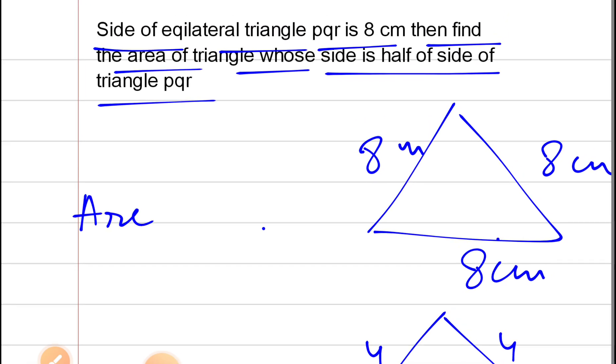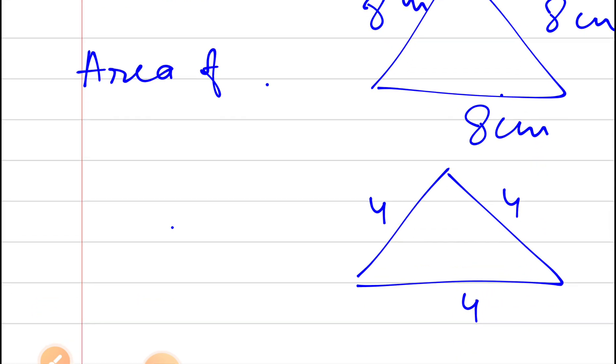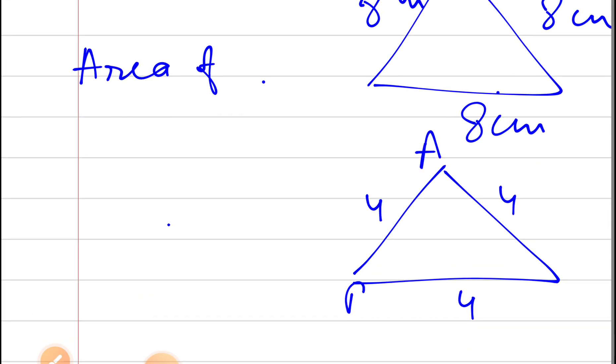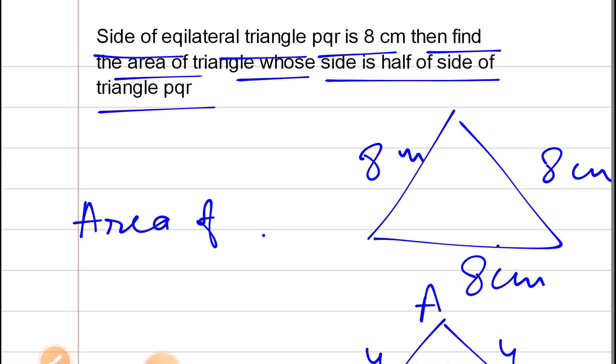Then the area of this triangle, let me call it ABC and it was PQR. So triangle ABC which is root 3 upon 4.